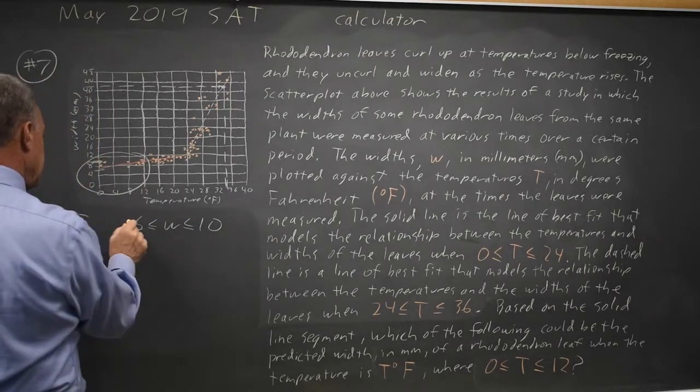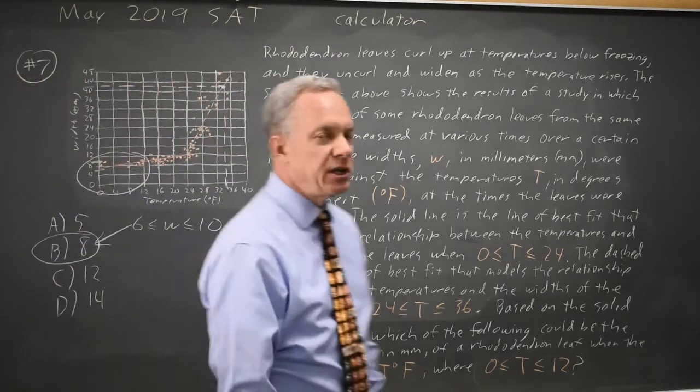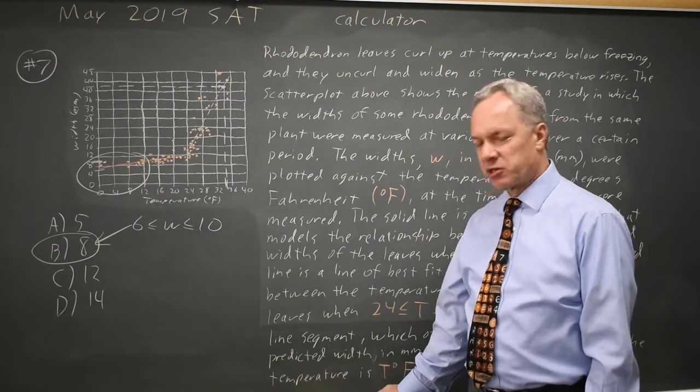But 5 is clearly too low and 12 is clearly too high. So the correct answer would be choice B, 8 degrees, which is just right for our rhododendron leaves in that temperature range.